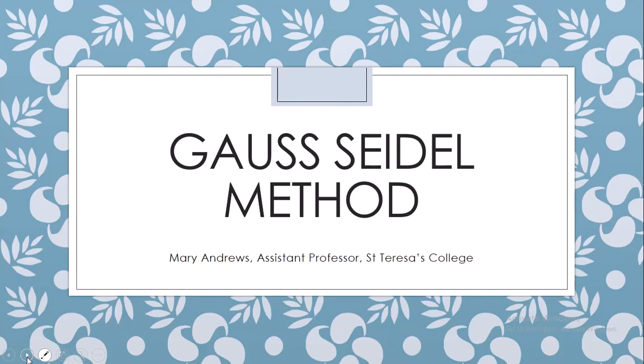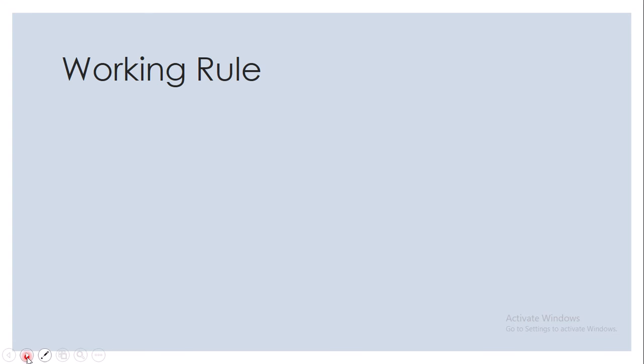Today we will be studying about the Gauss-Seidel method. This method is somewhat similar to Jacobi's method but with a few differences in the way we do the iterations. Jacobi's method is simpler, but in Gauss-Seidel let's see the working rule and then you will understand what the difference is.